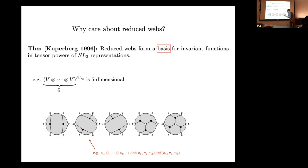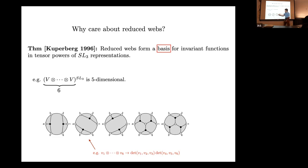Other webs give more complicated kinds of functions. If you take some other invariant function — say the determinant of the first, second, and fifth vectors times another determinant — that's also invariant, but it will be a linear combination of the things in this basis list. That's the content of Cooperberg's statement.